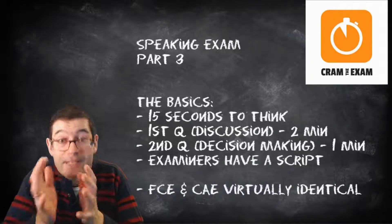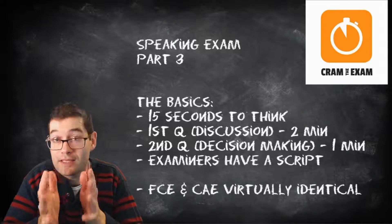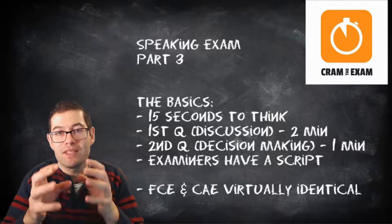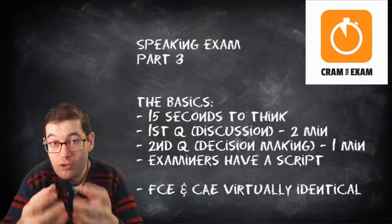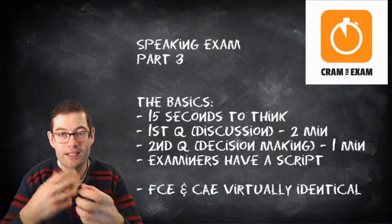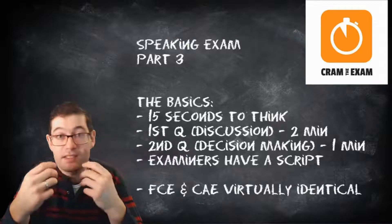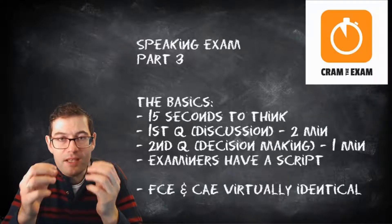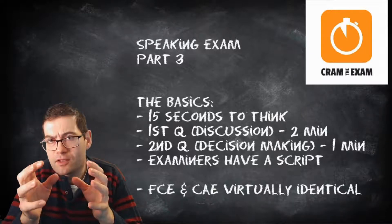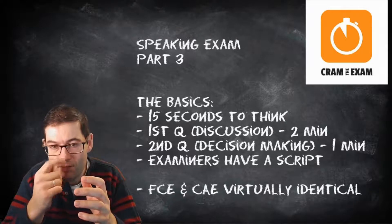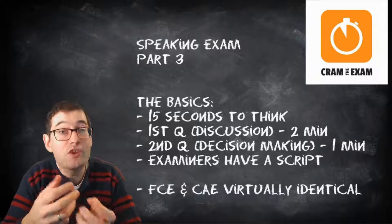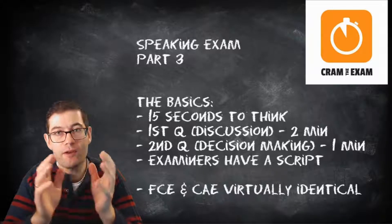Let's move on to the basics — what this question is all about and what's actually going to happen. You're going to be given five prompts and you've got 15 seconds to read those prompts and start thinking. It's not a lot of time, but by this point in the exam you should have settled down and be in your flow in terms of speaking English. Part three is divided into two parts: the first question is the discussion, around about two minutes, and the second part is decision-making or trying to come to an agreed conclusion, which is around about one minute.